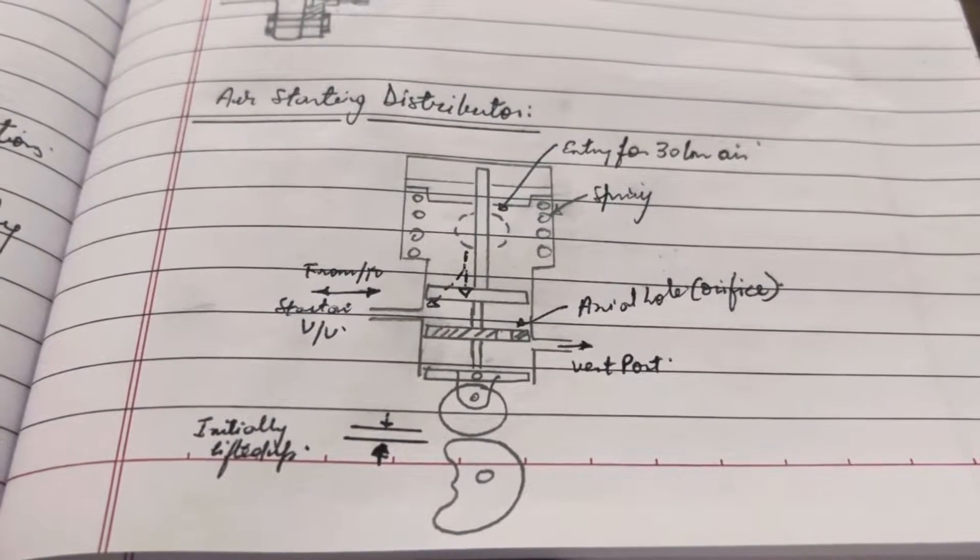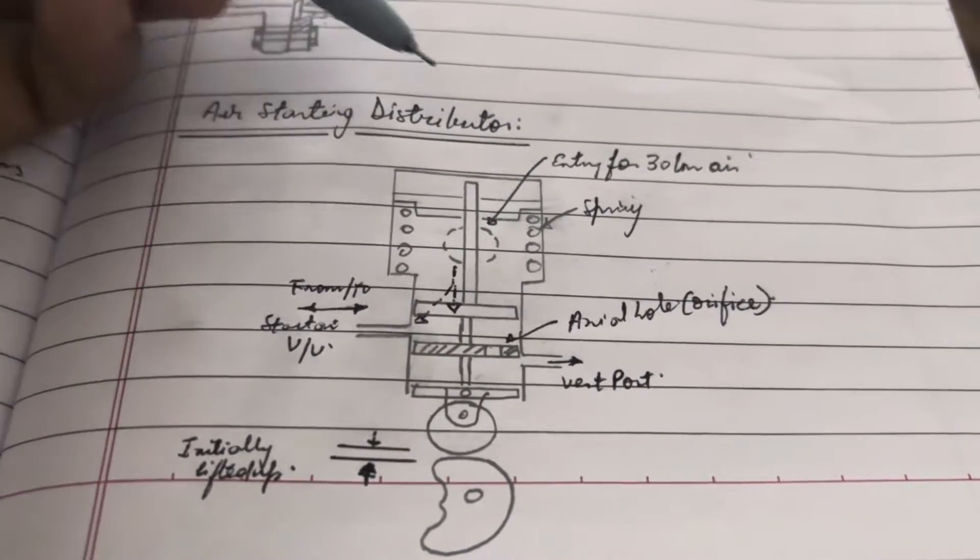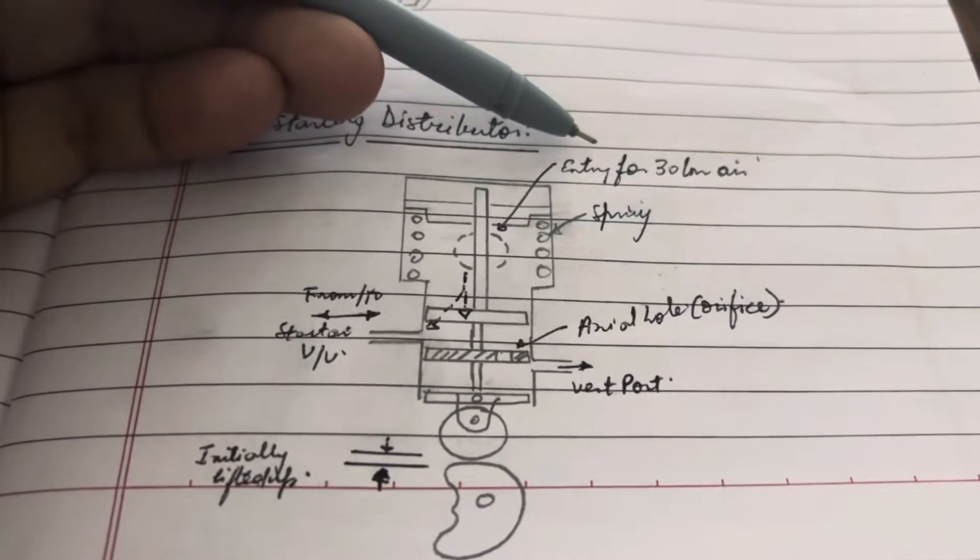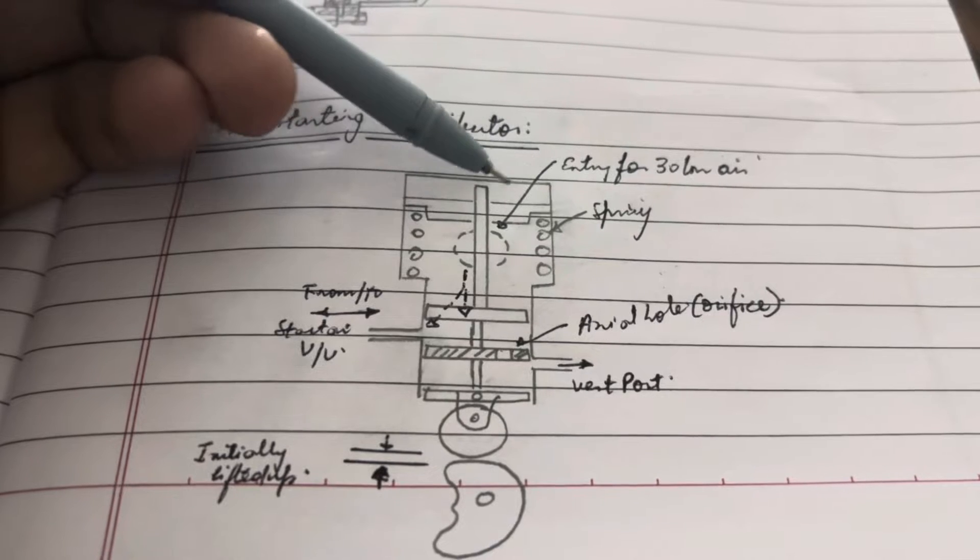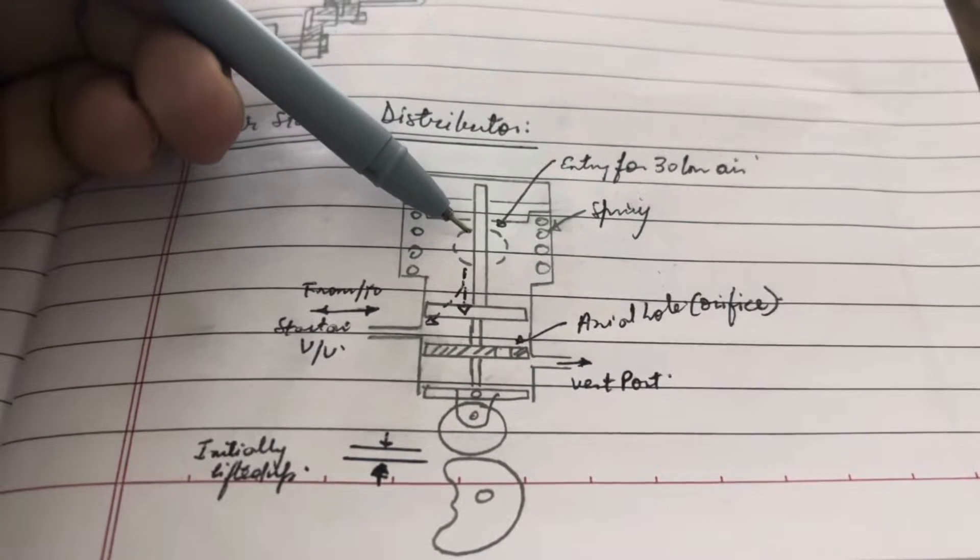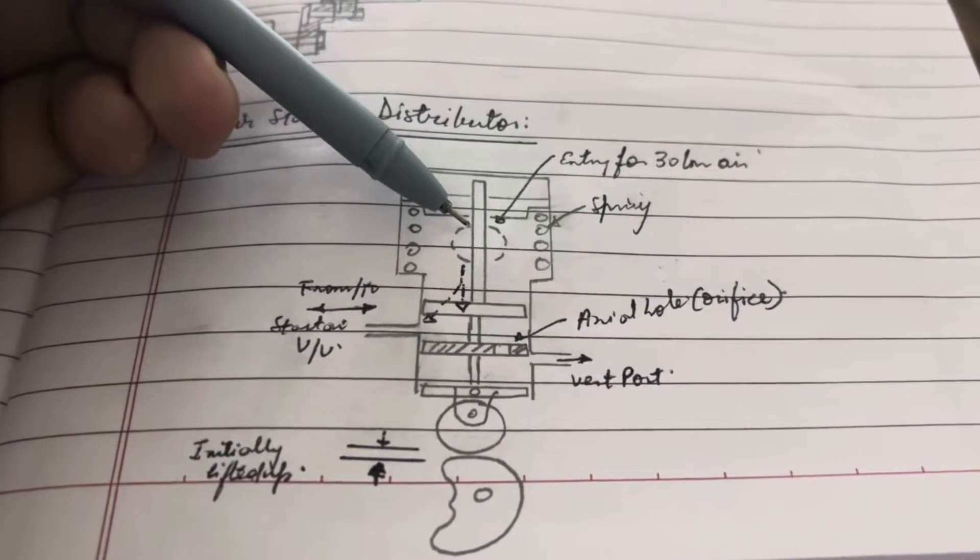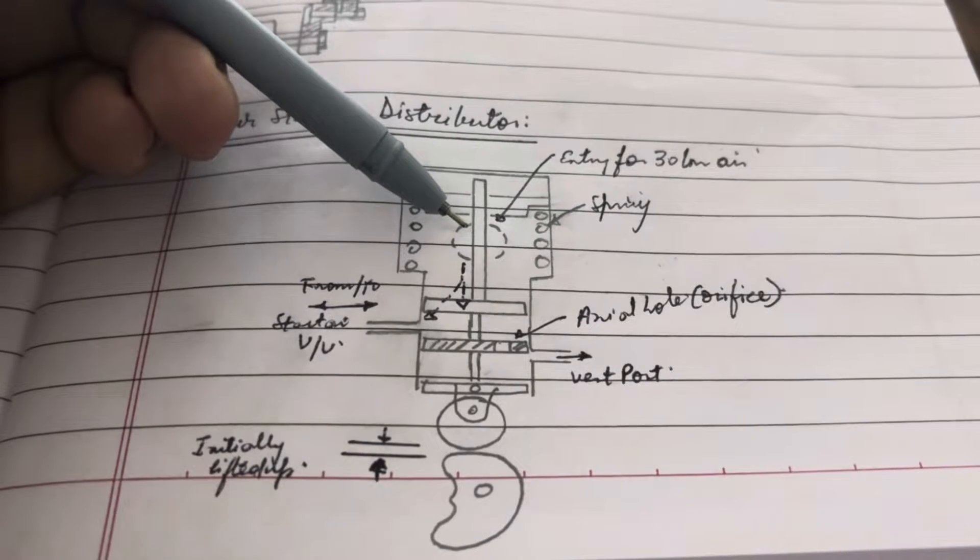The entry point for the 30 bar air, as you can see, is on the axial side—that is, towards the piston side. From here, the air has two points to go, but before that, we have to understand the initial position of the air distributor for a particular unit.